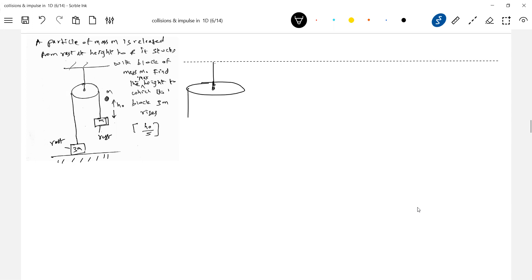I'll discuss all maximum possible cases. So this is block 3M which is kept on the ground. Just before collision, this particle will have velocity U equal to root of 2GH₀, and this is at rest. After collision, collision occurs.